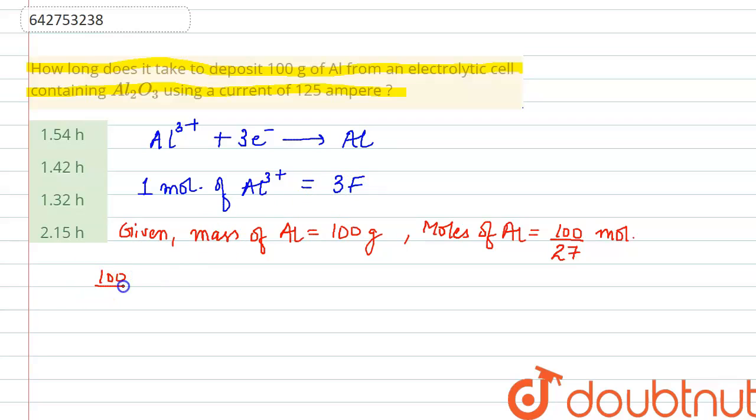Our 100/27 moles of aluminum will be deposited when we transfer a charge of 3F × 100/27. So this much charge is required. This is the value of our Q.